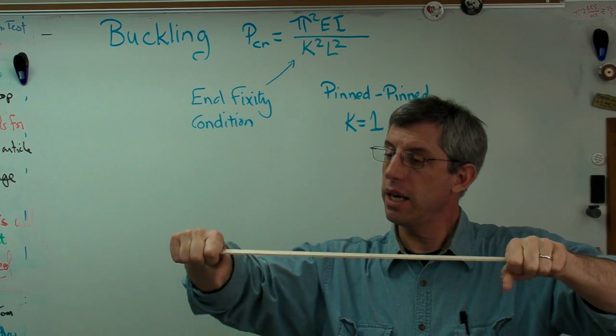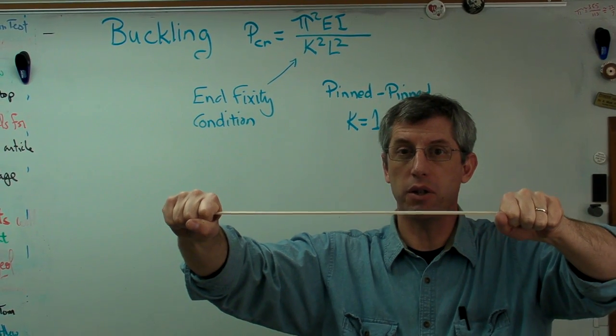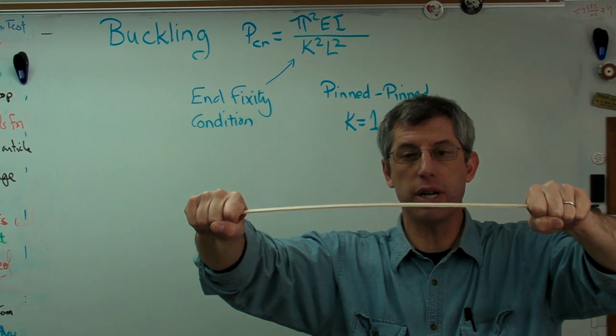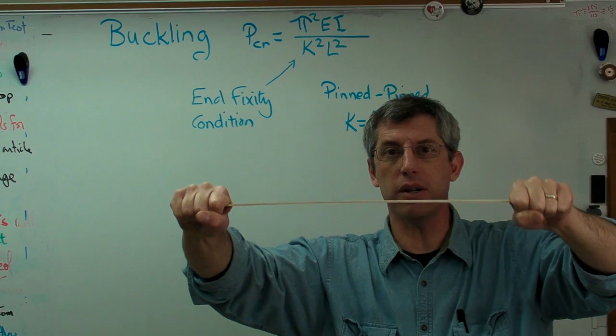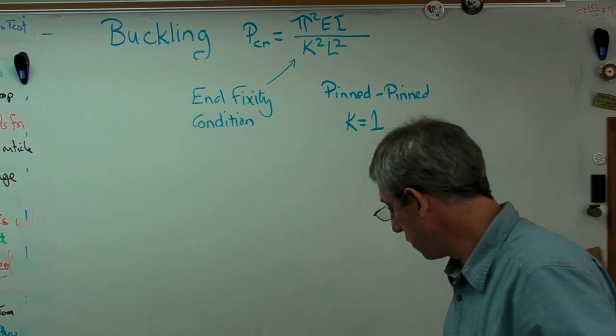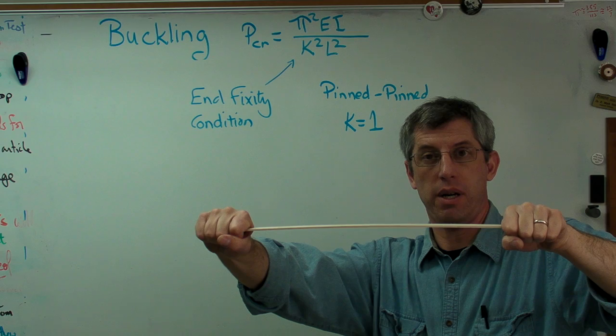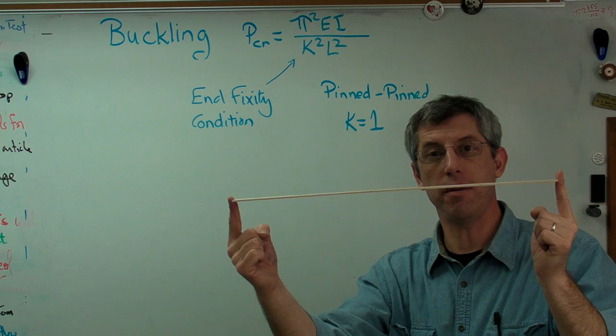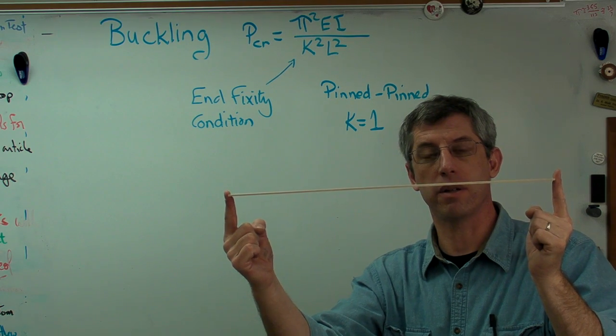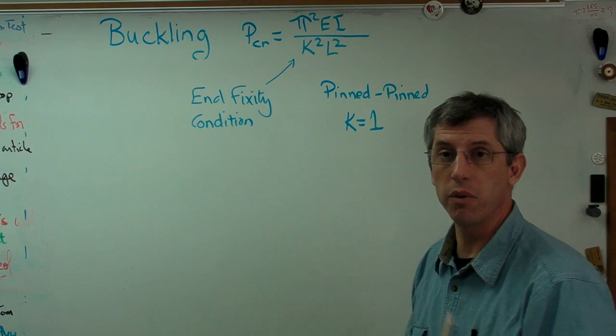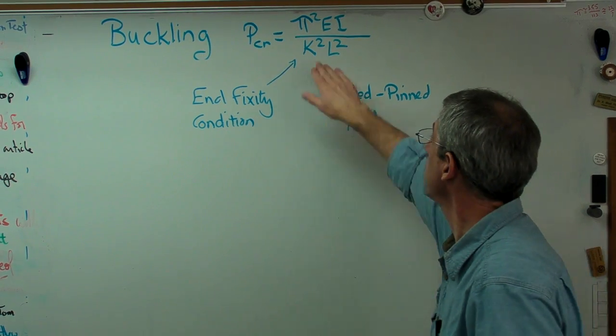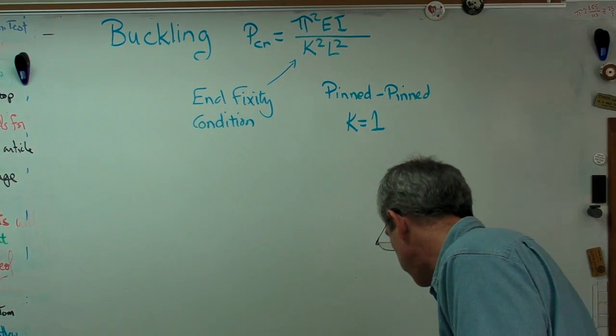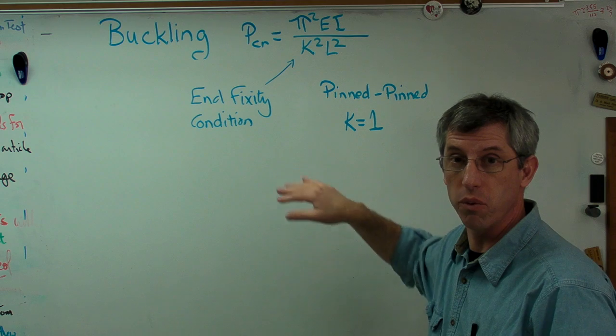If I were to take a similar stick and clamp it so the ends could not translate and they couldn't rotate, they had to stay horizontal, it gets a lot harder to buckle. Essentially, a clamped-clamped column in compression acts like a pinned-pinned column in buckling that's shorter than it really is. For clamped-clamped boundary conditions, k is less than 1. So that goes up. It acts like a beam that's shorter than it really is.